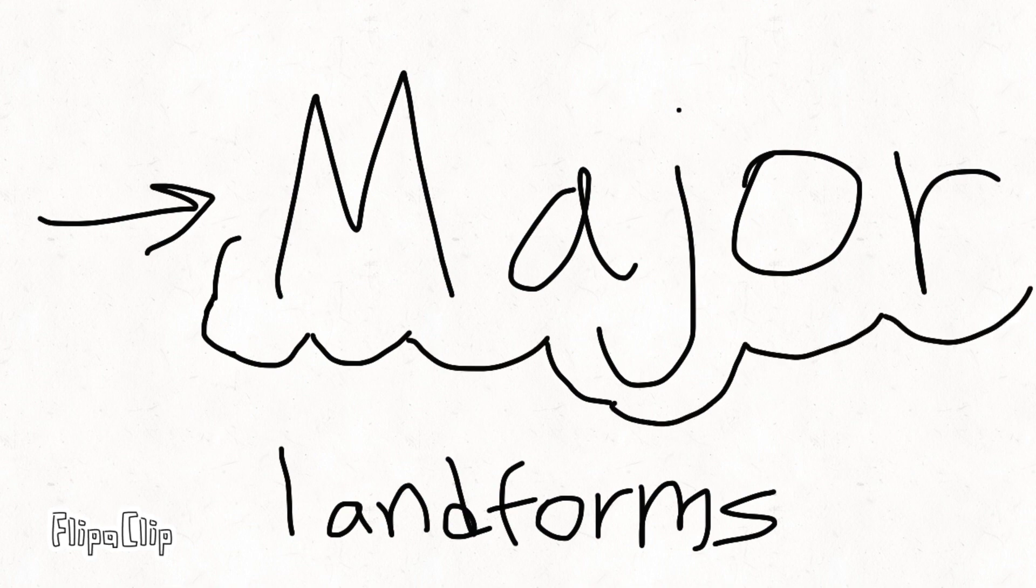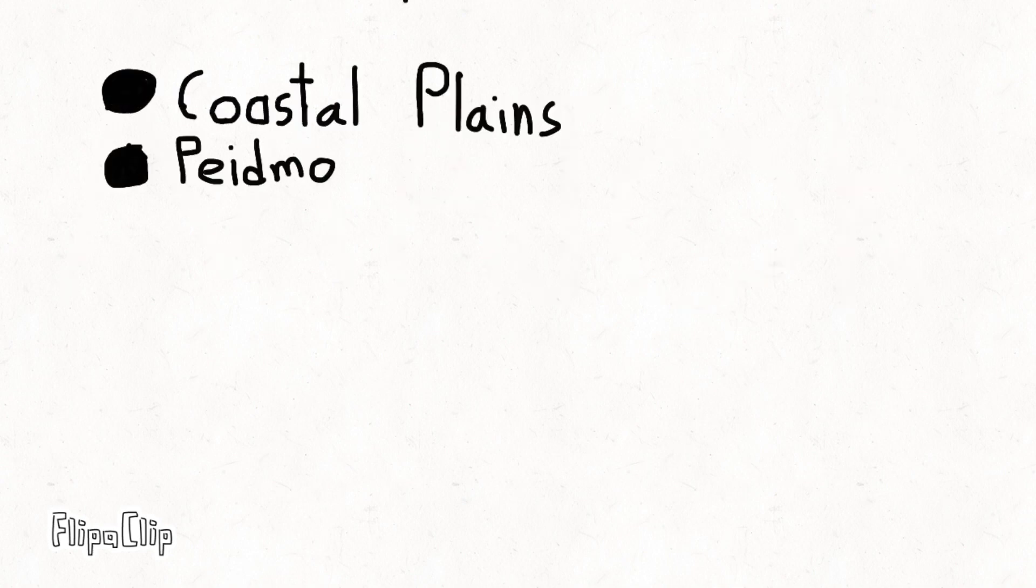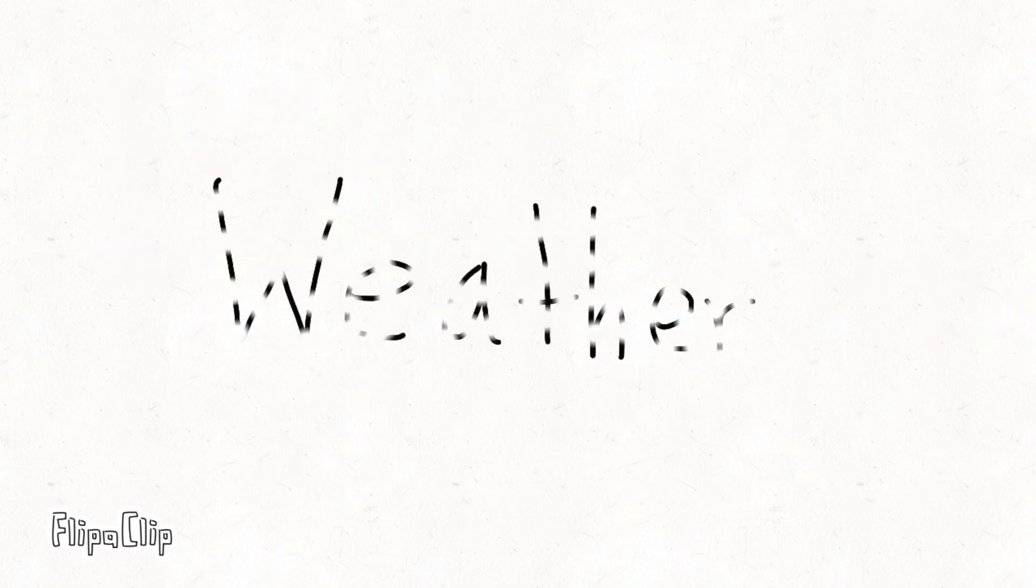We're going to talk about major landforms. That 'major' is very important, so I'm talking about only major landforms. There is the coastal plains, there is Piedmont, and there is the Appalachian Mountains.